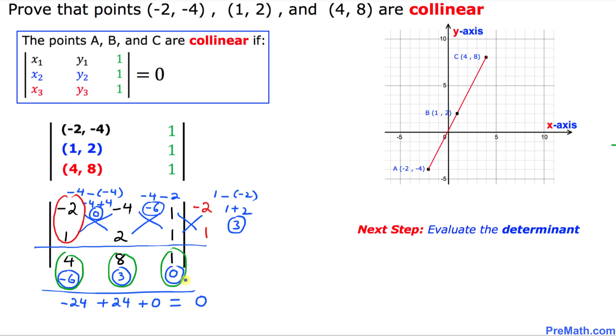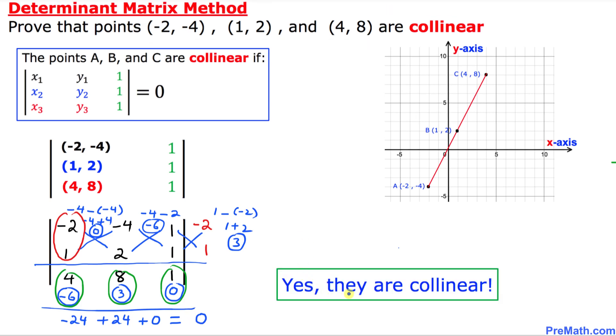So thus we have concluded that these given 3 points are indeed collinear since the value of this determinant turns out to be 0.